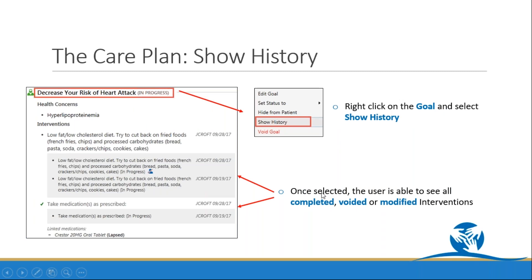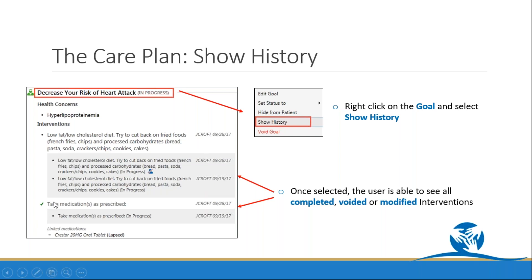You're able to show the history of the goal or interventions you've been doing with a patient. To show history, go to the goal level, right click, and select show history. For example, an intervention created on 9-19, hidden from the patient on 9-28, and then removed on the same day will all appear in the history. A completed intervention shows a green check mark, and a voided intervention would show a red X.